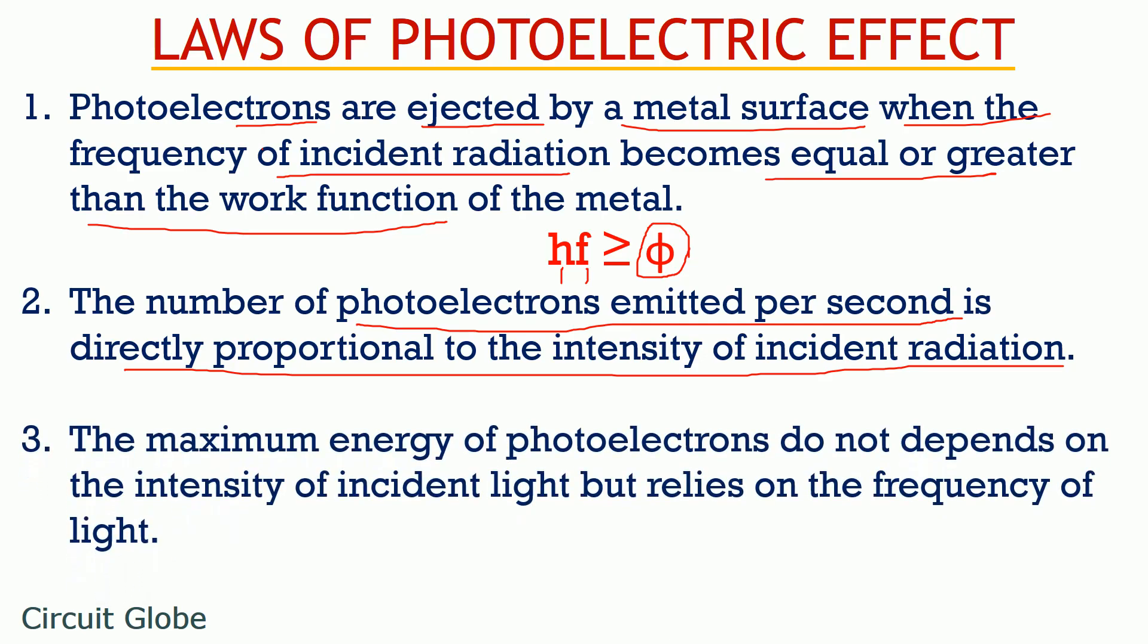The third law states that the kinetic energy of photoelectron is independent of the intensity of incident radiation but it is dependent on the frequency component of the light. Now the question arises, what is this kinetic energy? So we know that sometimes the energy of the photon is more than the work function of the metal. So the extra energy is utilized by the emitted electron as its kinetic energy.